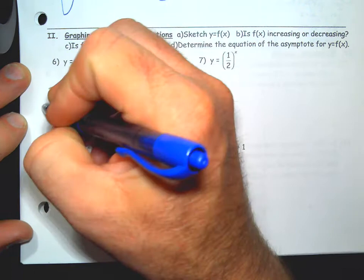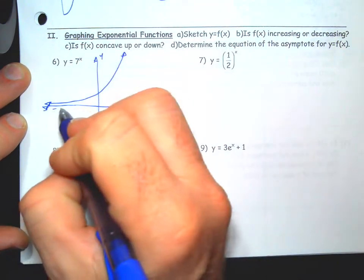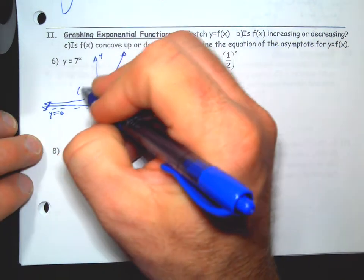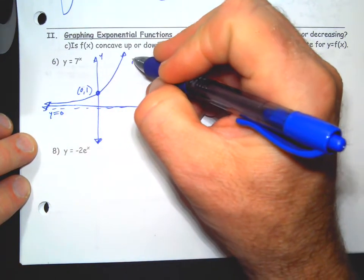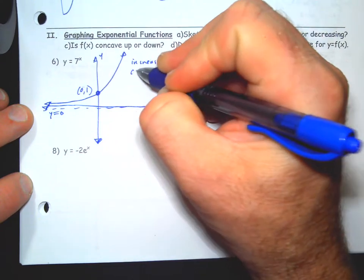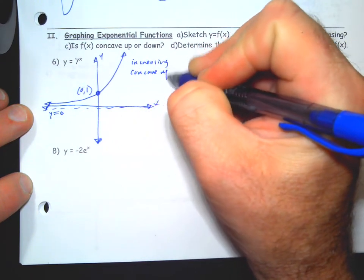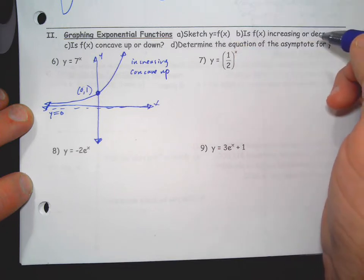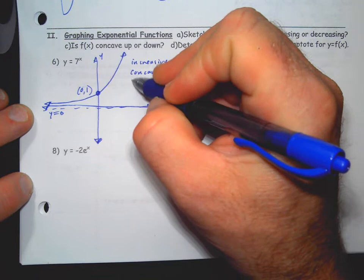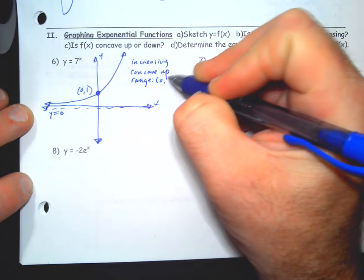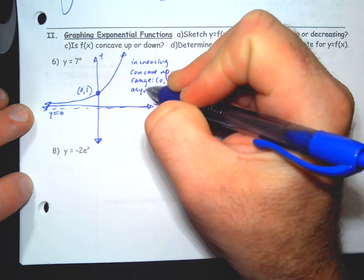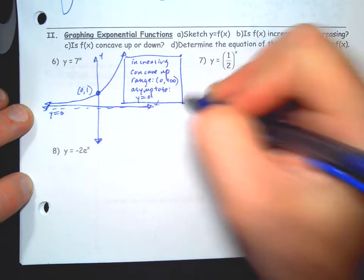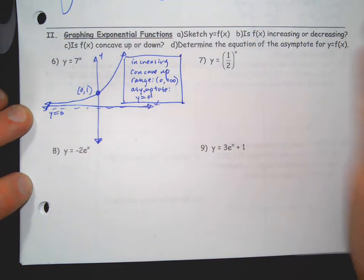This doesn't have any changes to it, so that'll be our final answer. I do want the horizontal asymptote drawn and labeled. I want the y-intercept labeled. This is increasing, this is concave up. It says increasing or decreasing, sketch, concave, determine the equation of the asymptote. We'll do range also, just like we're doing in class, and then asymptote.